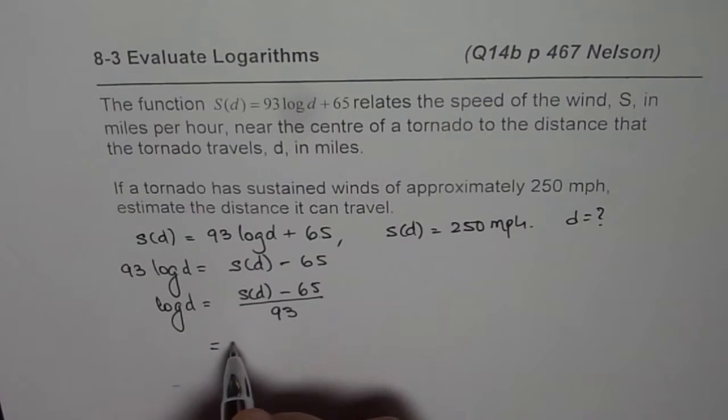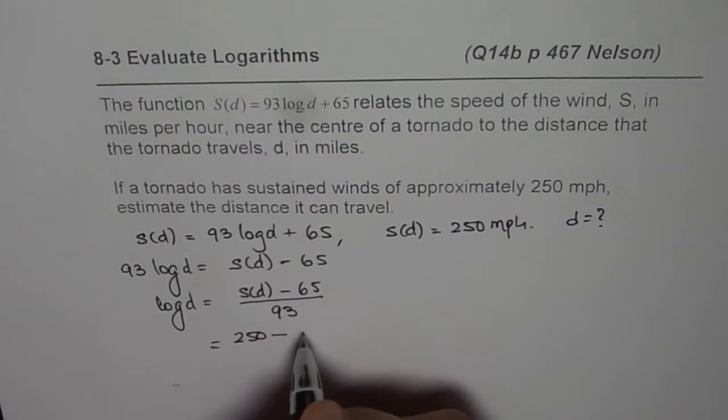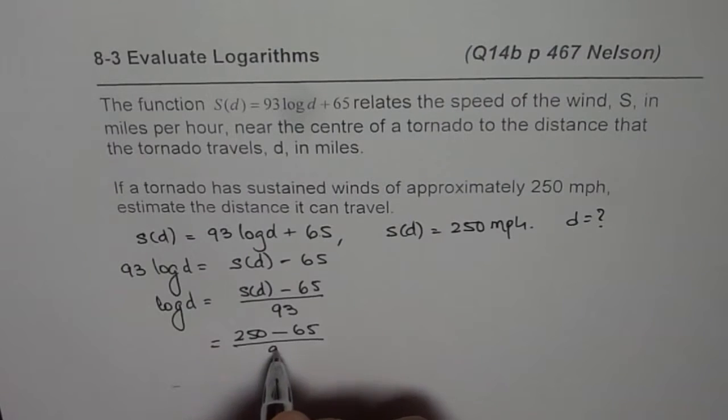So S(D) is 250. So we have 250 minus 65 divided by 93.